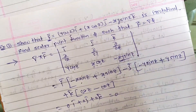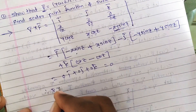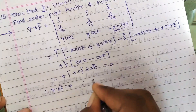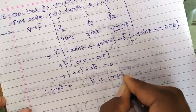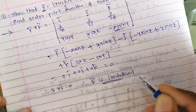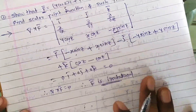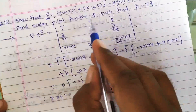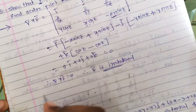The result is 0î + 0ĵ + 0k̂ = 0̄. Therefore ∇ × F̄ = 0, which confirms that F̄ is an irrotational vector field. Now, the additional question: since F̄ is irrotational, we have to find the scalar point function φ.